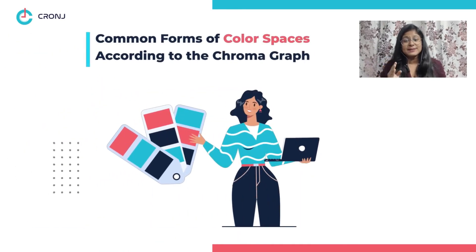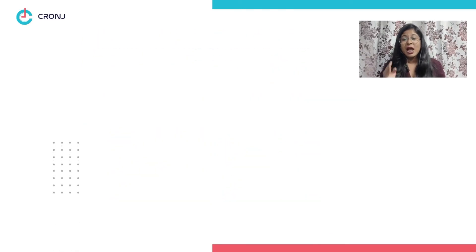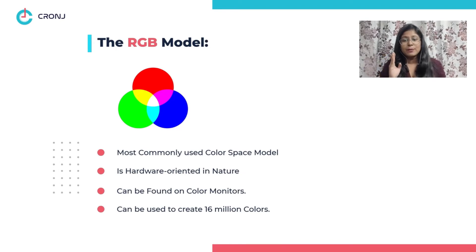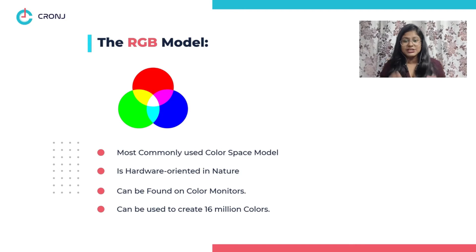The most common forms of color spaces include RGB, or the Red, Green, and Blue model. This is one of the most commonly used color spaces and is hardware-oriented in nature. It can be found on every color monitor, and using this color space you can create over 16 million colors.